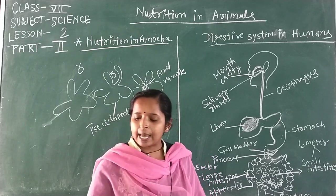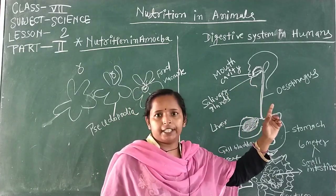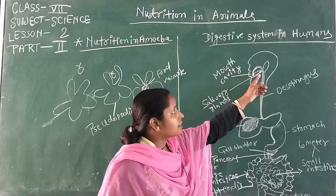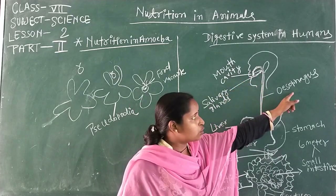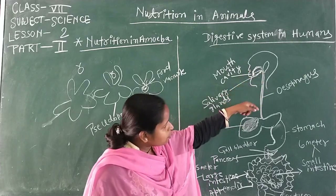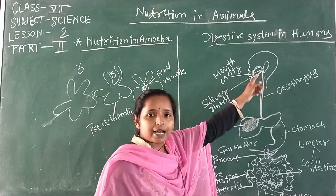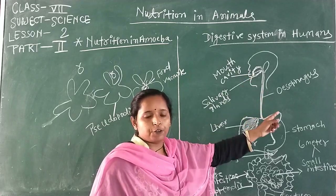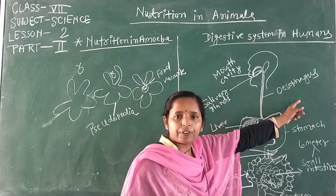All the organs in our mouth help to change food materials into simpler particles. Then these food materials are pushed through the food pipe, also called the esophagus. This food pipe transports food from the mouth to the stomach.